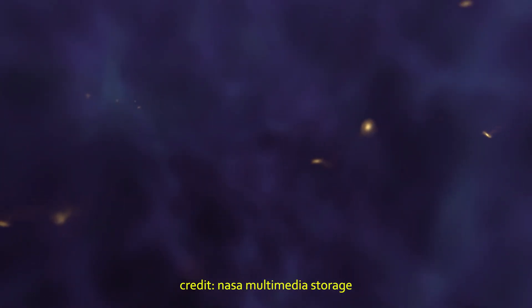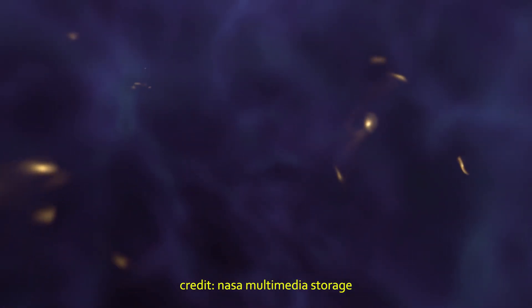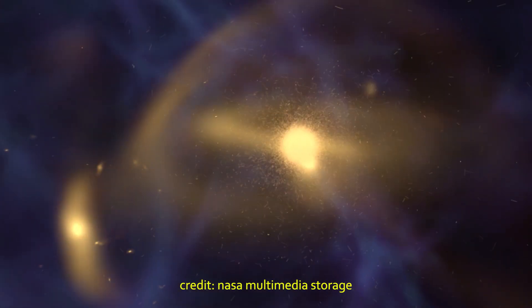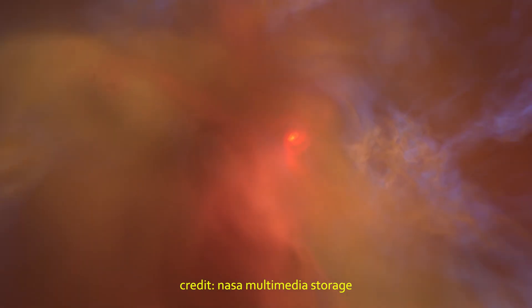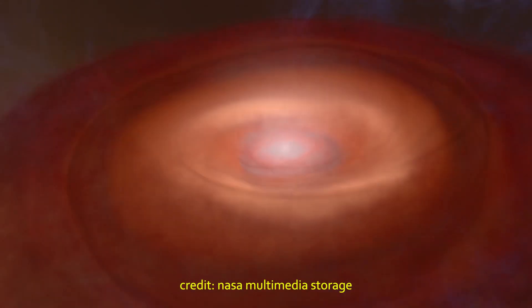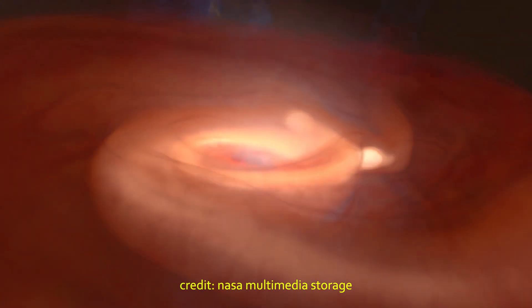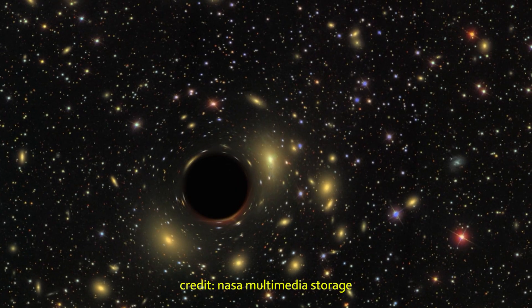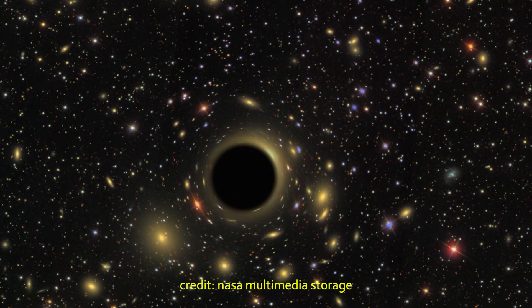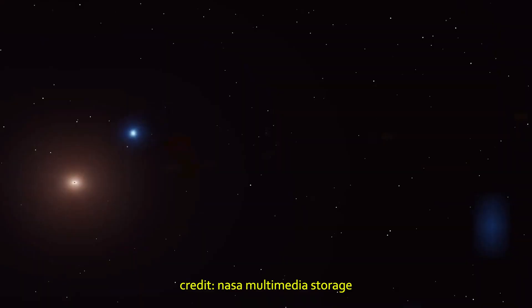But if the mass is higher, closer to 20 or 25 solar masses, the collapse doesn't stop. The pressure becomes so extreme that even neutrons get crushed. And at that point, the star doesn't explode. It disappears. No light. No flash. Just gone. A black hole born in silence.